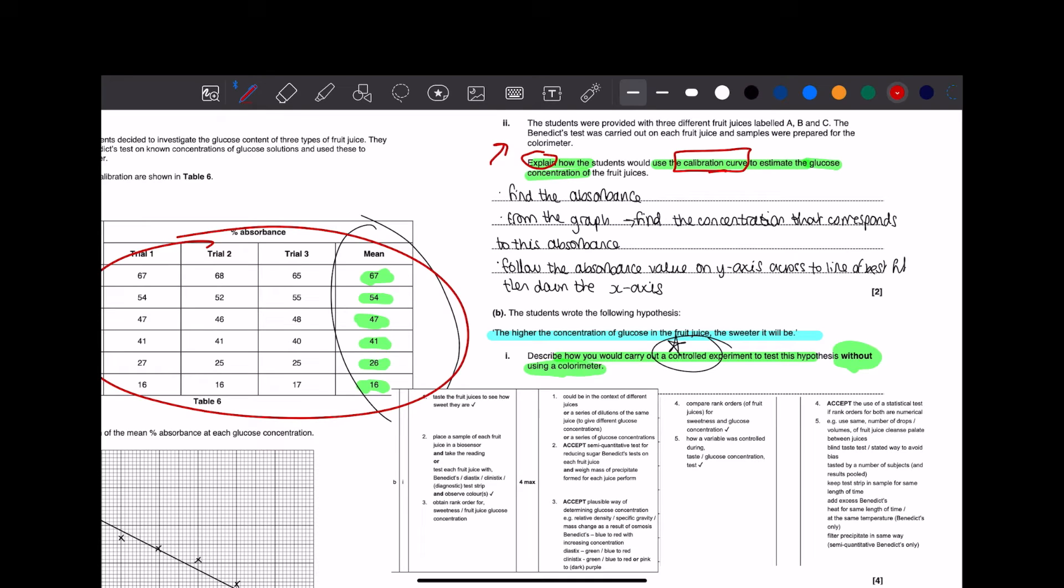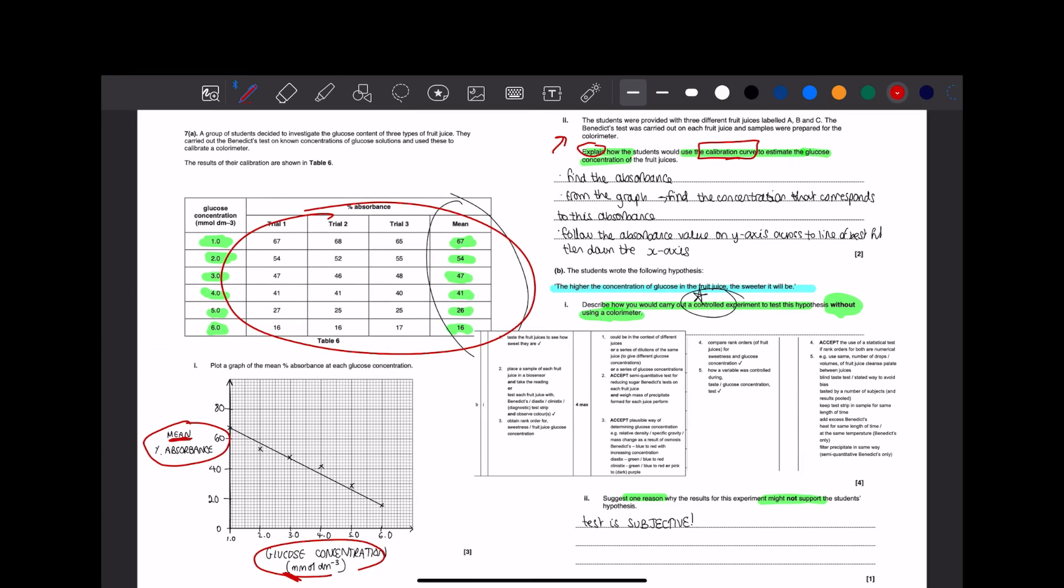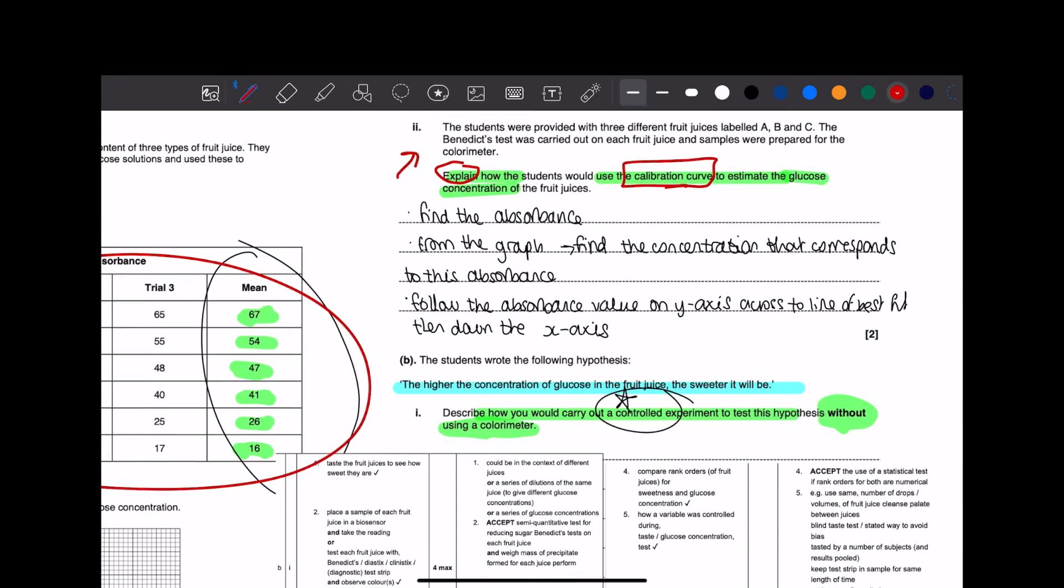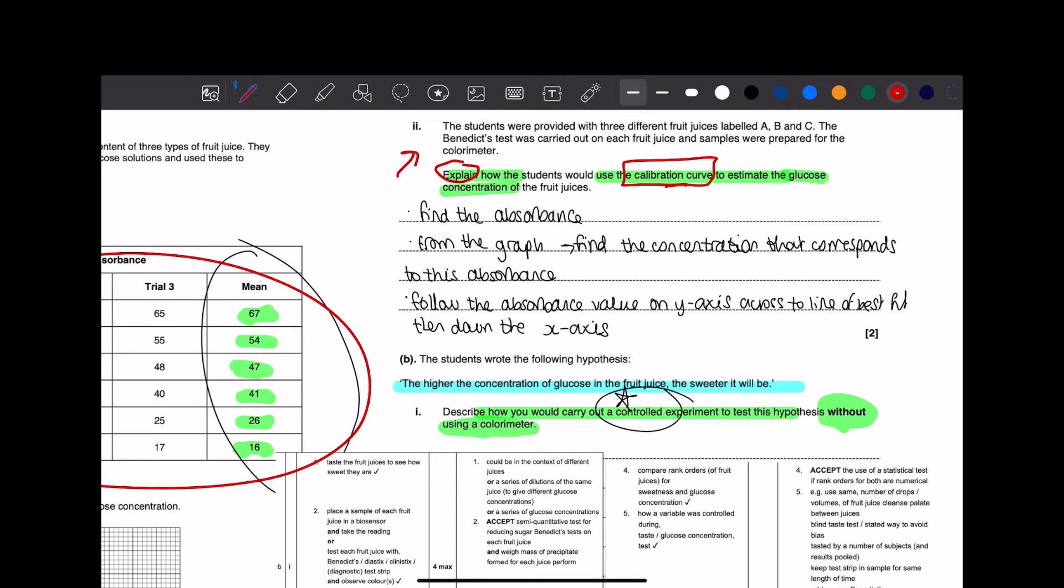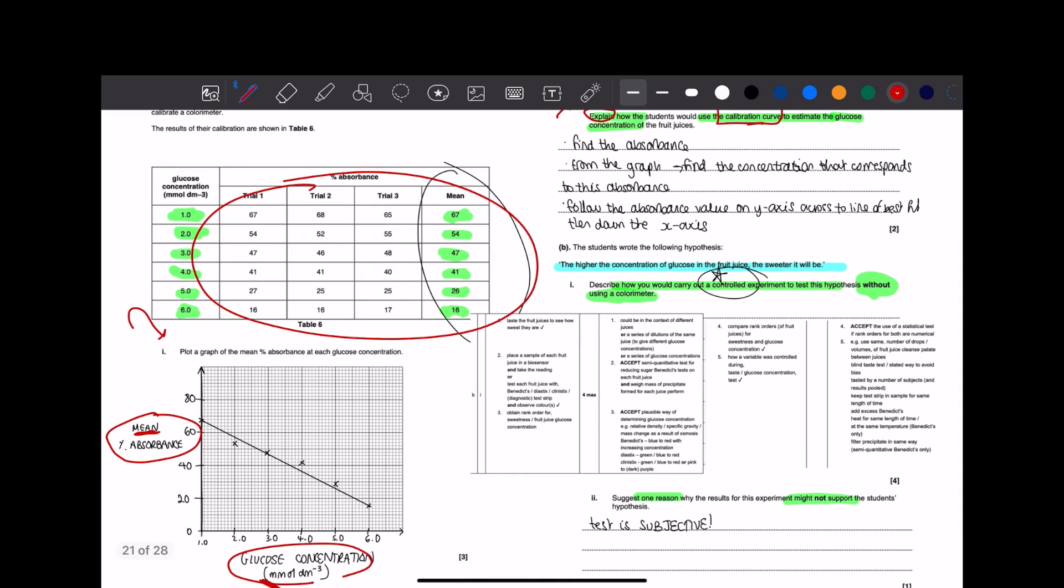Basically, we're trying to find unknown glucose concentrations. This is why they've given you this table to draw, because that is the calibration curve. As for this answer, you would find the absorbance from the graph and find that concentration that corresponds to that absorbance.